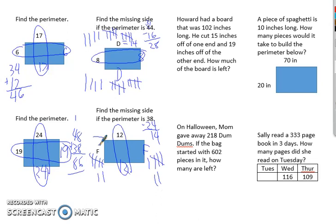Howard had a board that's 102 inches long. He cut fifteen off one end, nineteen off the other. How much of the board is left? I like to add the two pieces cut off together. So he cut off thirty-four. It was a hundred and two. And he cut off thirty-four, so we're subtracting. Got to come borrow. He goes to ten and then nine. When he comes back, he borrows. Twelve minus four is eight. Nine minus three is six. Sixty-eight inches left.